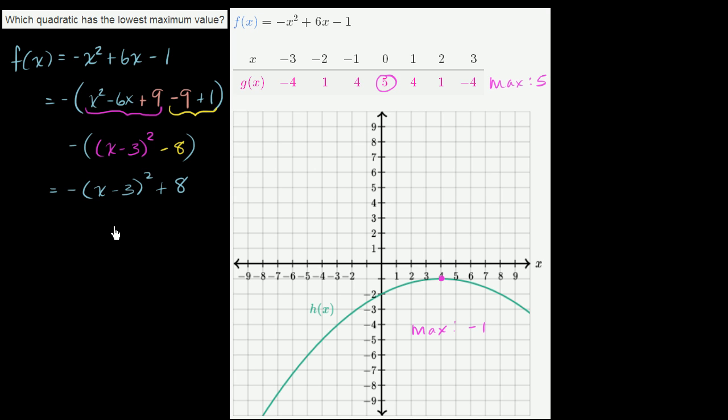Now, let's think about what the maximum value is. To understand the maximum value, we have to interpret this -(x - 3)². Well, (x - 3)² is always going to be non-negative. But then when we make it negative, it's always going to be non-positive. Think about it. If x equals 3, this is going to be 0, and the negative of that is 0.